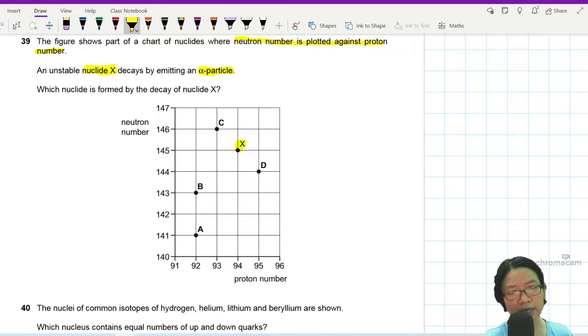So X is going to decay and release alpha. So X will become, let's say, Y, and then you have alpha. But alpha is 4,2. So let's look at the neutron number and the proton number.